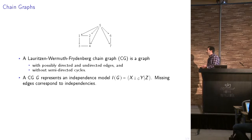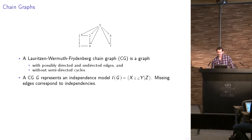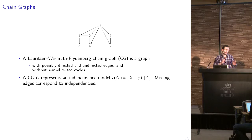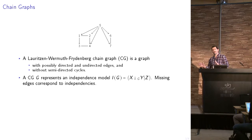As any other graphical model, a chain graph is used to represent a set of independences, which I call an independence model. The independence model represented by a chain graph G is denoted I(G), and it's a set of triplets representing independences — X and Y independent given Z, where X, Y, and Z are sets of nodes. I'm using the classical interpretation, also called the Lauritzen-Wermuth-Frydenberg interpretation, where missing edges in the chain graph correspond to independences.